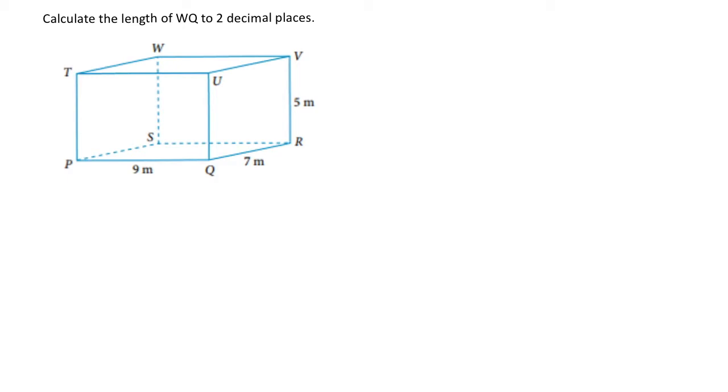We're going to start off by marking in the side we're looking for, which is WQ. To be able to calculate that length from W to Q, we're going to need to form a right angle triangle. We do that by going W to S, then S back to Q. And that is our right angle triangle that we can use to calculate our WQ side.